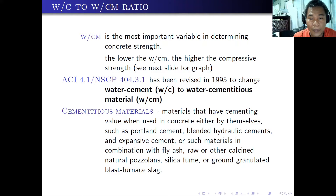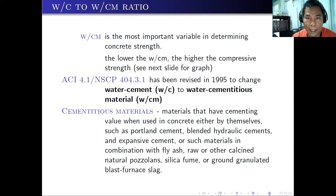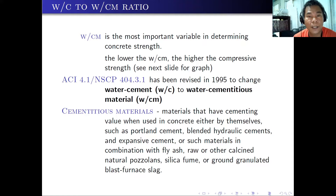Cementitious materials are materials that have cementing value when used in concrete either by themselves, such as portland cement, blended hydraulic cements, and expansive cement, or such materials in combination with fly ash, raw or other calcined natural pozzolan, silica fume, or ground granulated blast furnace slag.